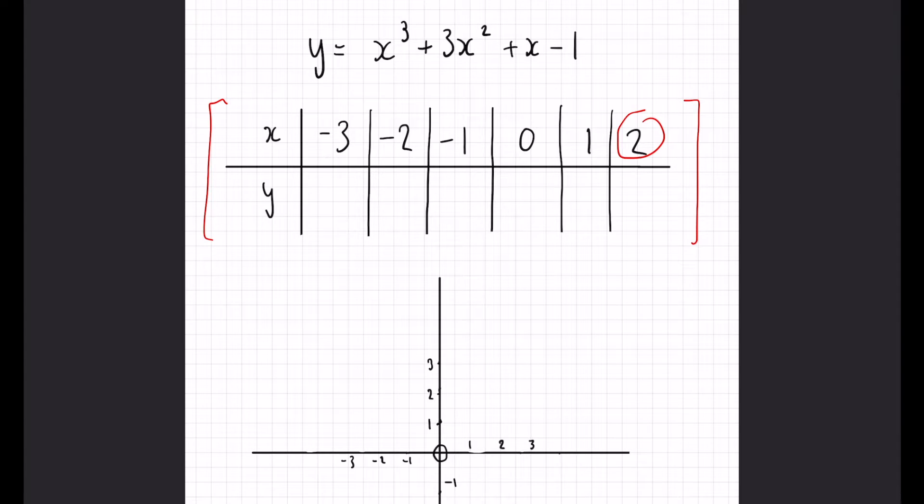So, we have 2 cubed, which is 8, plus 3 lots of 2 squared, which is 4, plus another 2 minus 1. And that is going to give us our Y coordinate. So, Y here is going to equal 8 plus 12 is 20, plus 2 minus 1. And we can see that's going to equal 21.